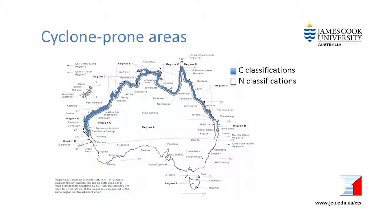The shaded area on the map indicates the cyclone regions. Houses built in these areas will have a C classification and will be designed and built to withstand the potentially longer duration of cyclonic winds and the different pressures that cyclones can generate.